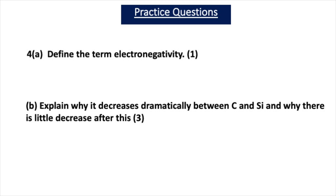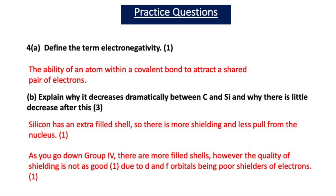The final practice question asks you to define electronegativity and explain the trend in group 4. Electronegativity is the ability of an atom within a covalent bond to attract a shared pair of electrons. It decreases dramatically between carbon and silicon because silicon has an extra filled shell, giving more shielding and less pull from the nucleus. After silicon, there is little further decrease because the quality of shielding is not as good, due to d and f orbitals being poor shielders of electrons.